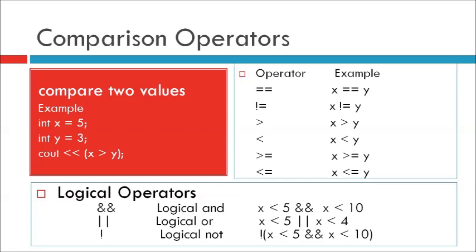Operator != (exclamation mark equal to), name: not equal — for example x != y. Operator > (greater than) — for example x > y. Operator < (less than) — for example x < y. Operator <= (less than or equal to) — for example x <= y.